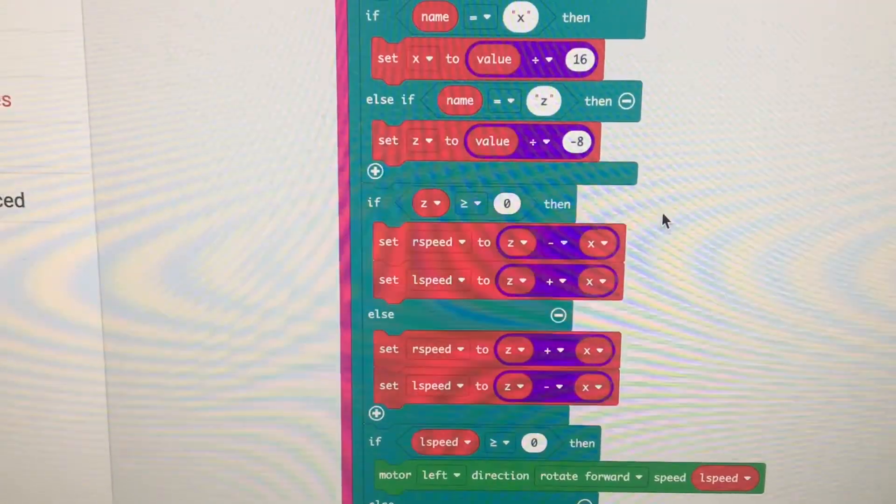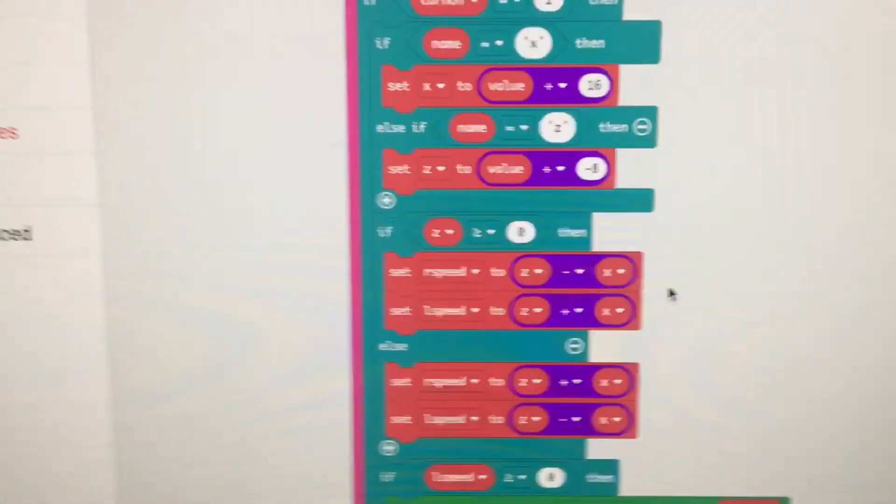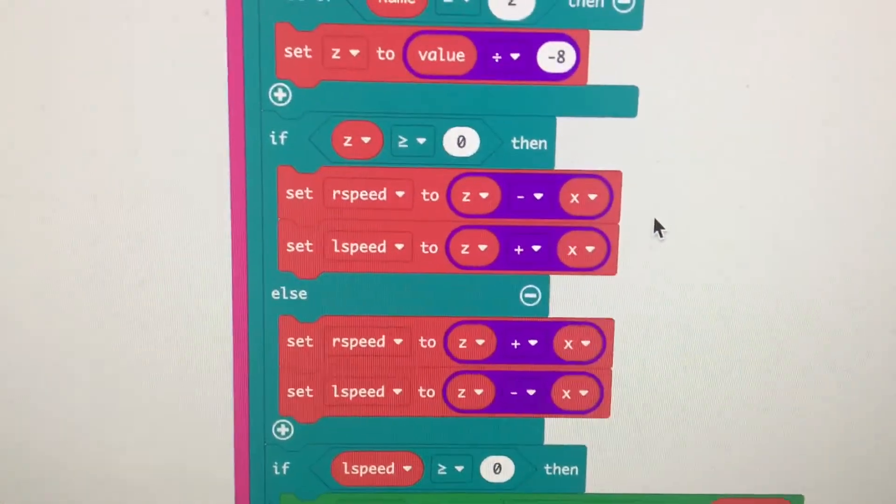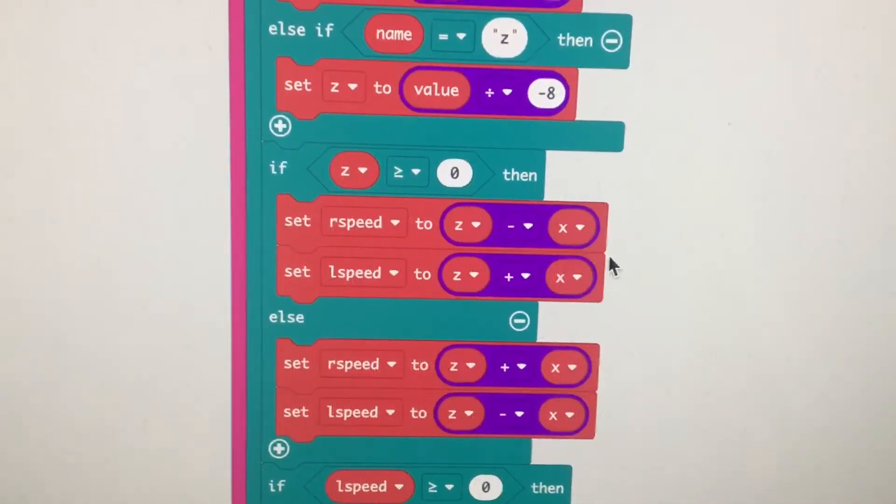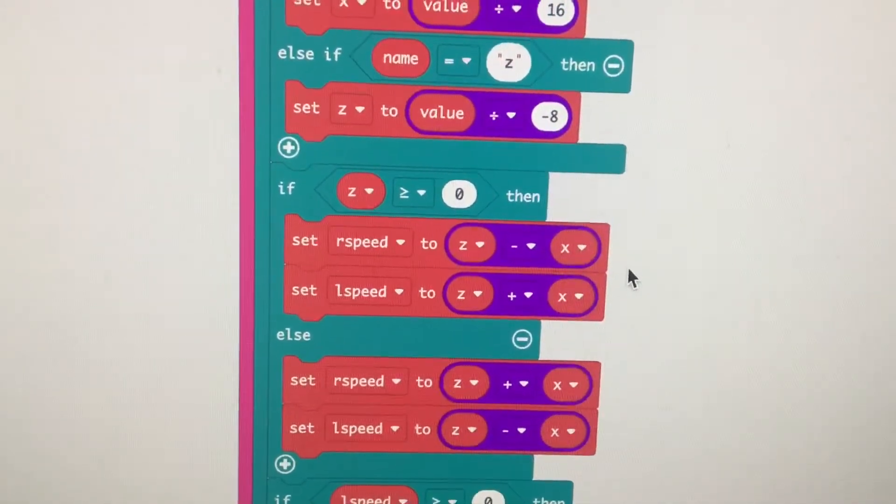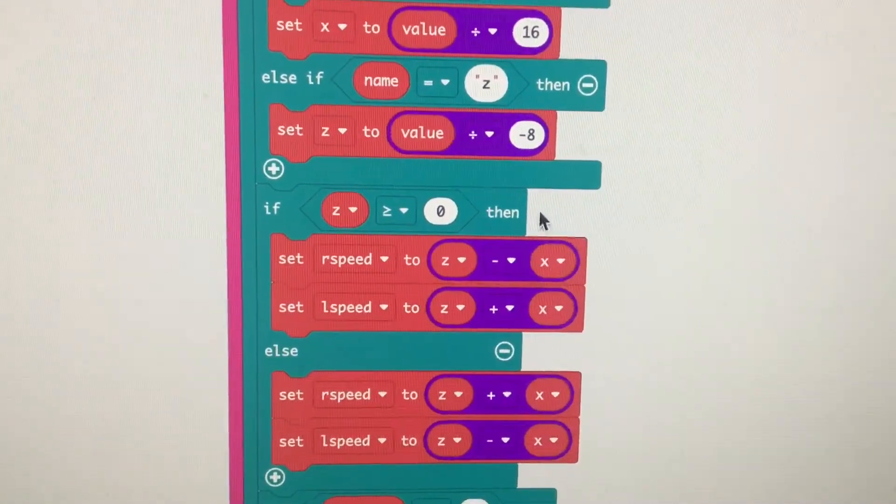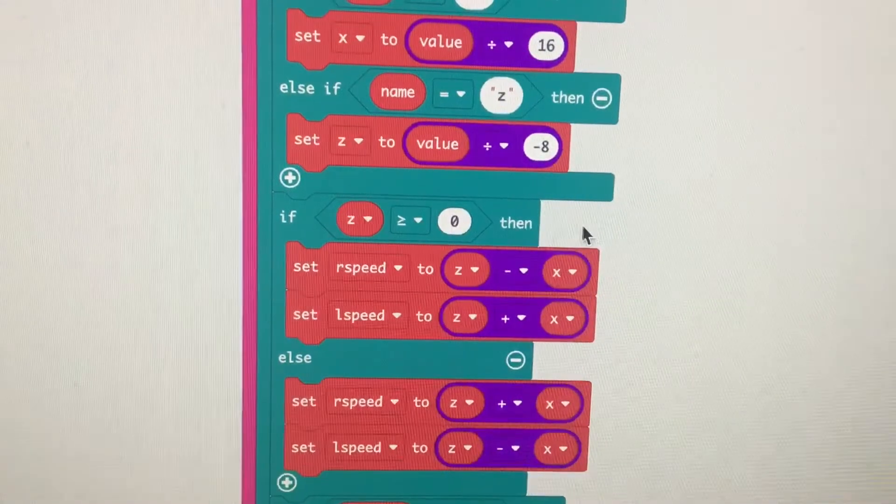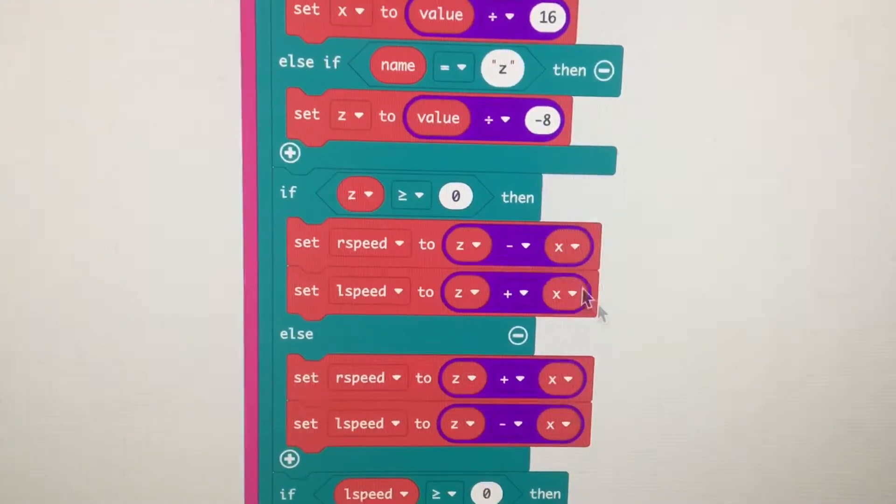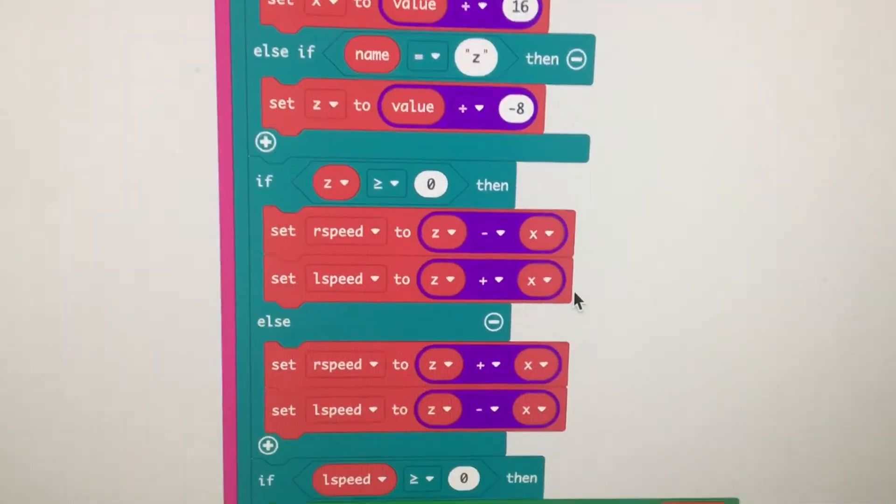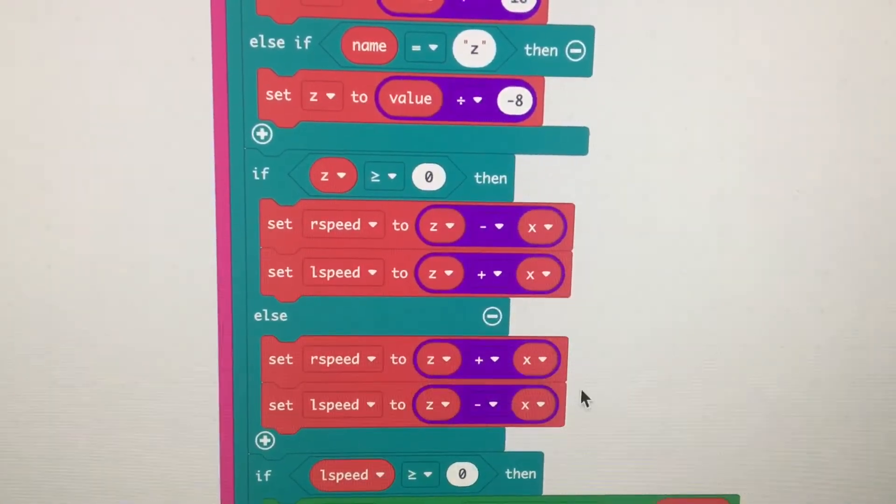Next I make the variables for the wheel speeds, R speed and L speed. And I use z as the base speed for both wheels. And I use x to turn by adding x to one wheel and subtracting it from the other. So if z is positive, then I make the right wheel go slower by x and I make the left wheel go faster by x. Otherwise, we're going backwards, I do the opposite.